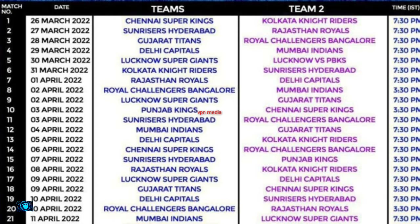April 5th: Chennai Super Kings vs Royal Challengers Bengaluru. April 7th: Sunrisers Hyderabad vs Punjab Kings. April 8th.